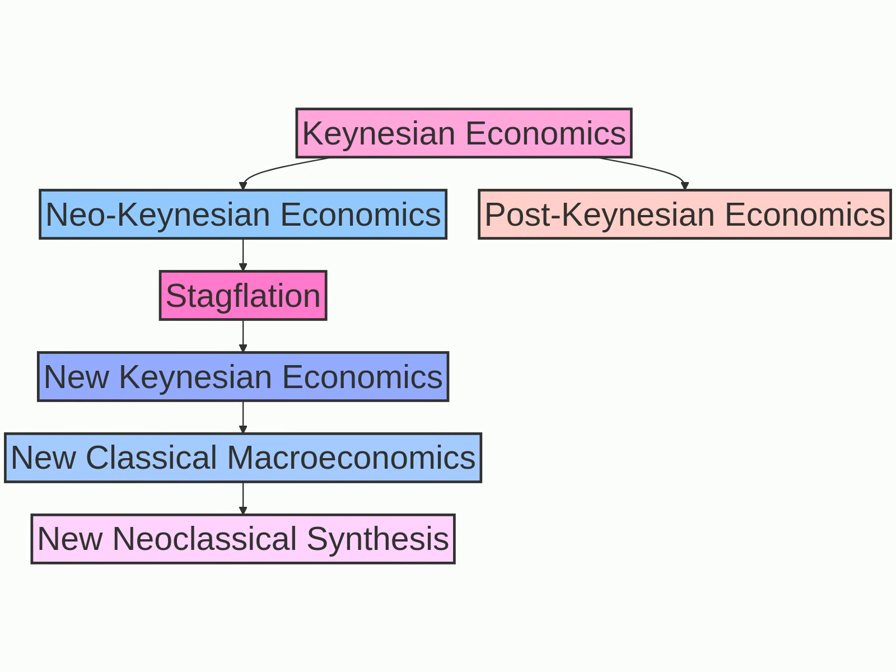The diagram represents the progression and evolution of Keynesian economics theories throughout history. It begins with Keynesian economics, originally developed by John Maynard Keynes, which advocates for government intervention to ensure full employment and desired economic outcomes.